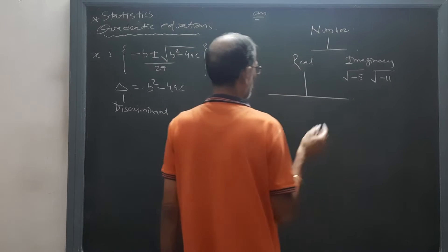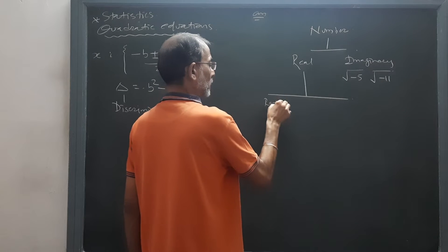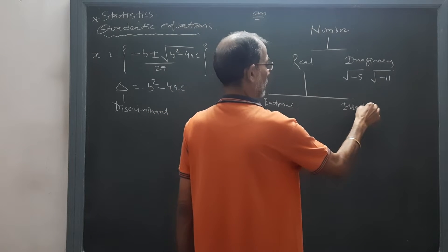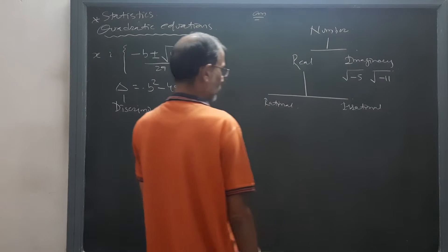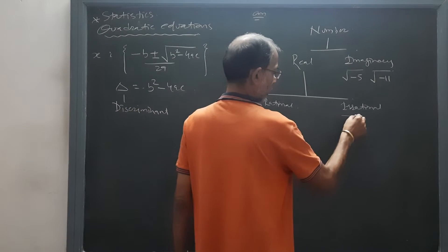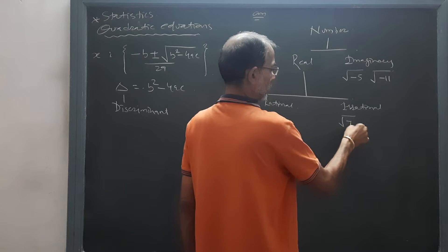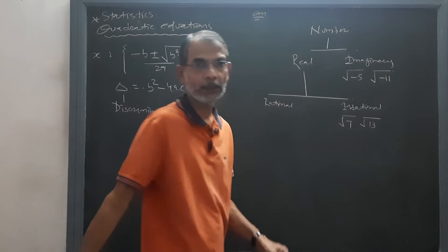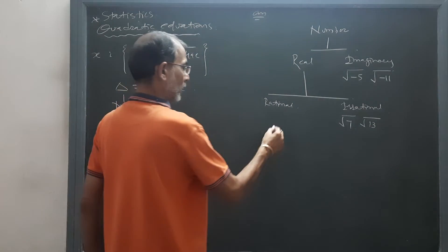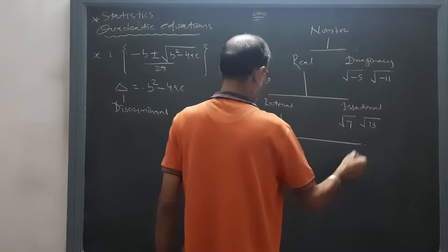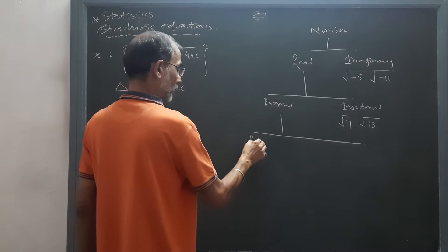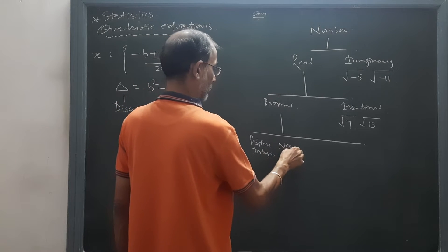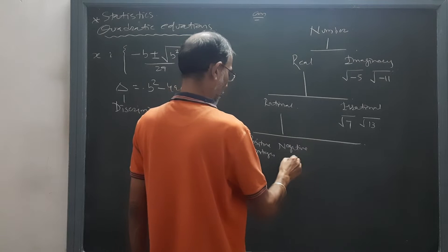You may have learned that imaginary means, for example, root of minus 5 or root of minus 11 — these numbers are called imaginary. In real numbers, there are two types: rational and irrational. Irrational means, for example, root of 7 or root of 13 — these are called irrational.